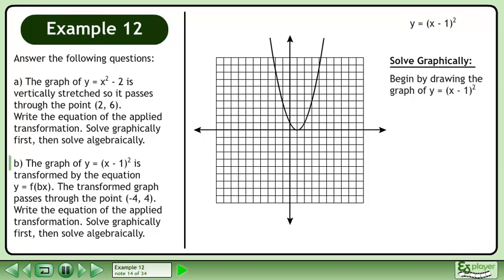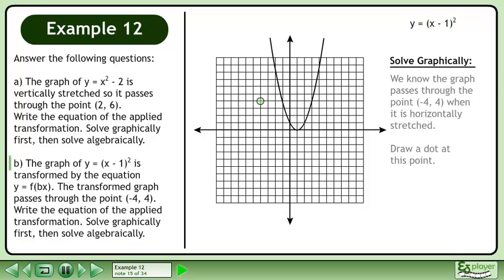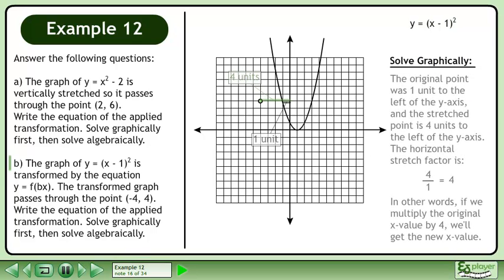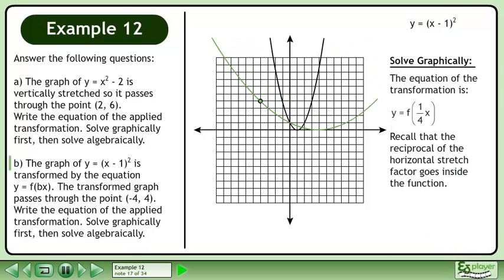Begin by drawing the graph of y equals x minus 1 squared. We know the graph passes through the point when it is horizontally stretched. Draw a dot at this point. The original point was 1 unit to the left of the y-axis, and the stretched point is 4 units to the left of the y-axis. The horizontal stretch factor is 4 divided by 1, which is 4. If we multiply the original x-value by 4, we get the new x-value. The equation of the transformation is y equals f(x/4).